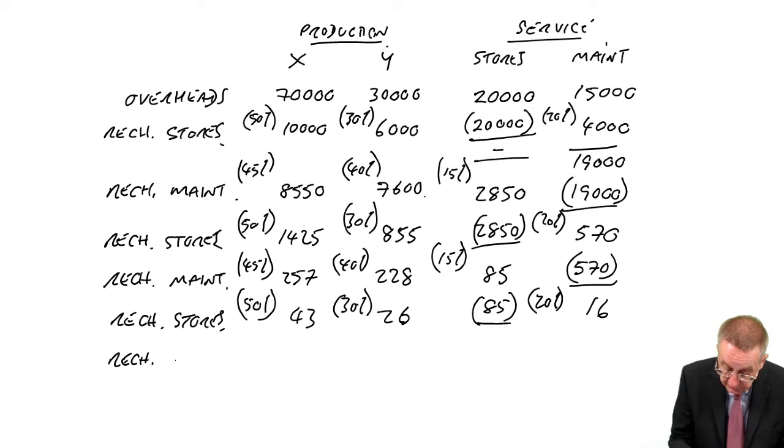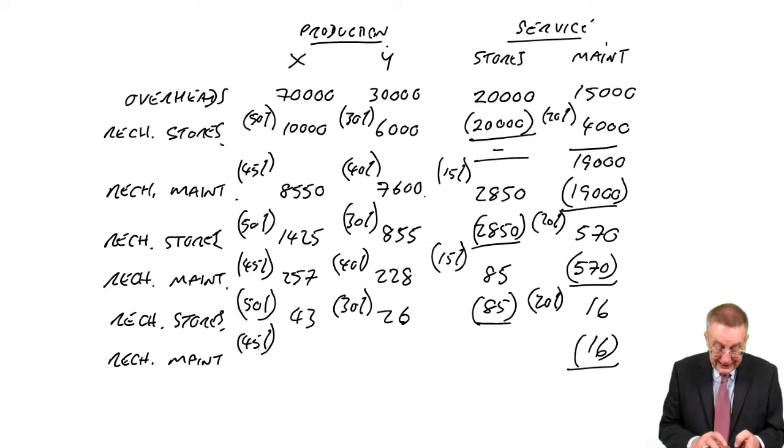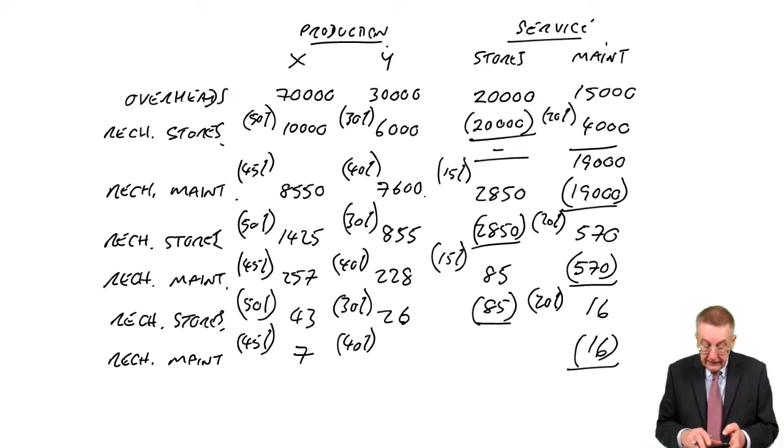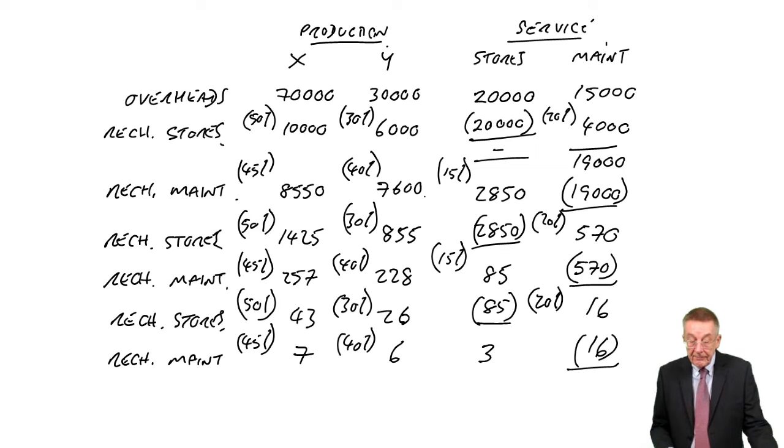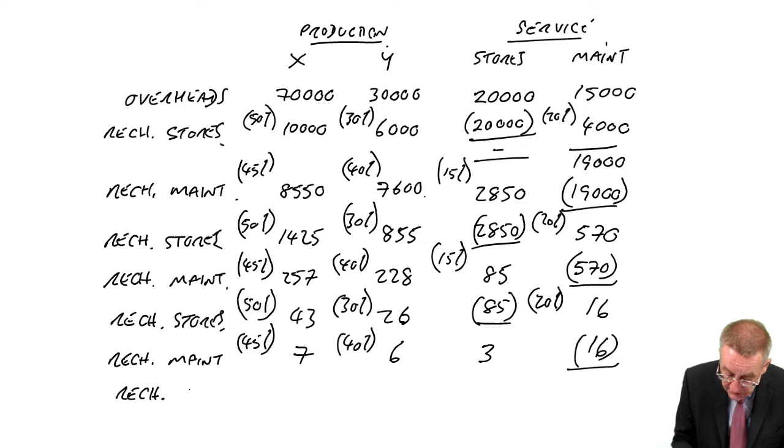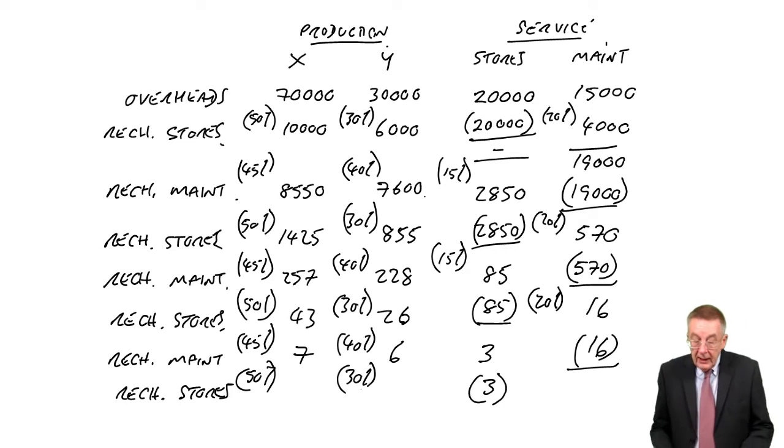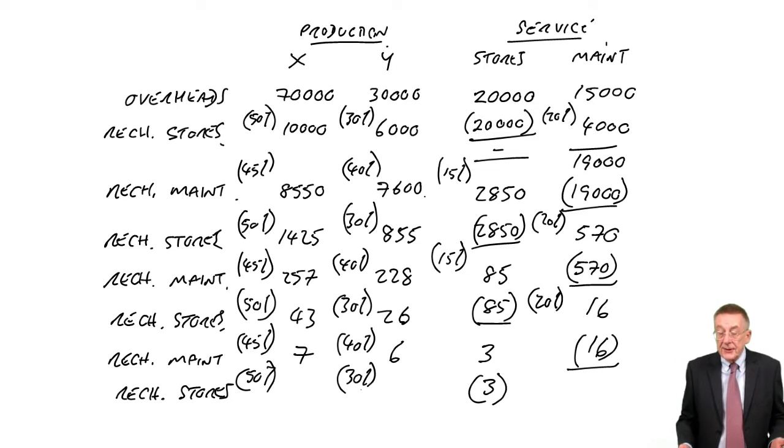Recharge maintenance. 45% to X is 7. 40% to Y is 6. What's that, 13? So the remaining three goes to stores. And I think now I'm going to stop because we recharge stores. Well, with only three, 50% to X, 30% to Y. Well, we've only three left. And again, we're not going to worry about cents. It would be ridiculous. So I'll put two to X, one to Y, and we've finished.